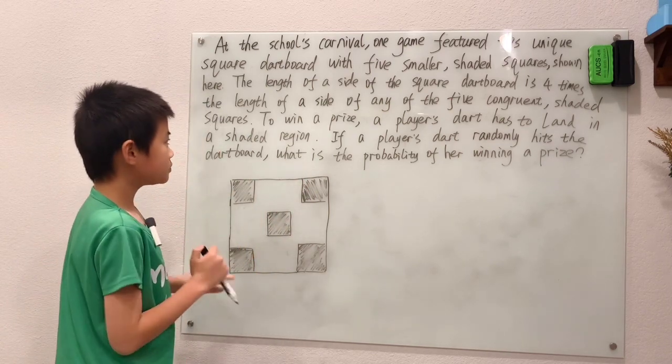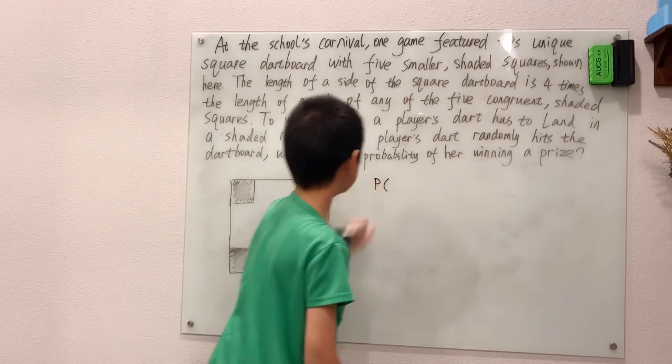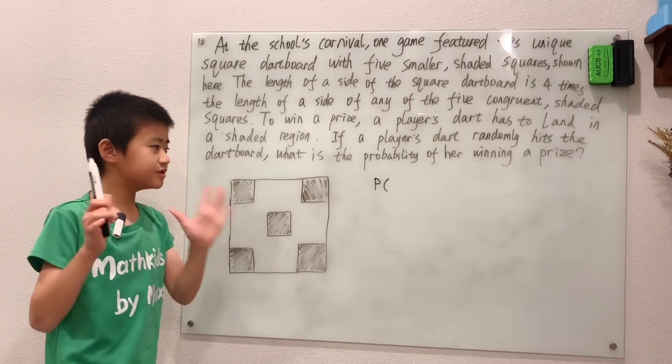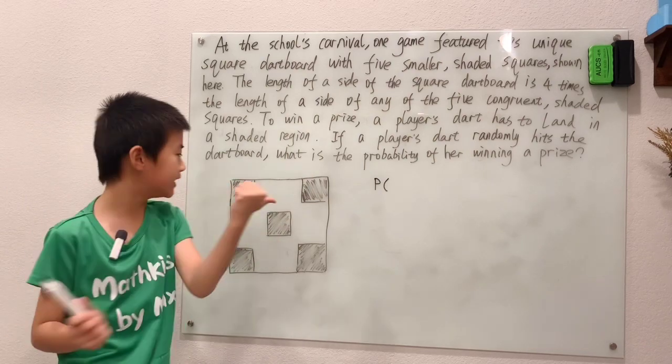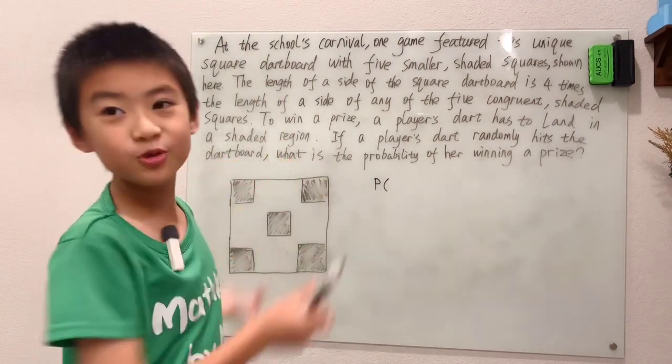We need to count the probability that the player's dart, because it's hitting it at random. It's kind of like you close your eyes, aim the gun, and shoot. That's random.